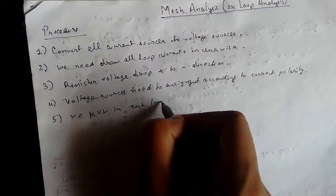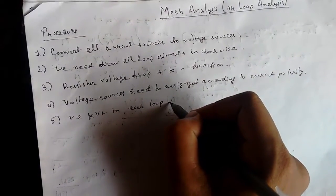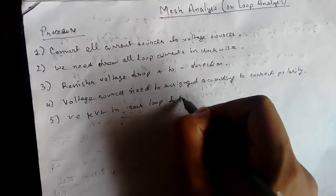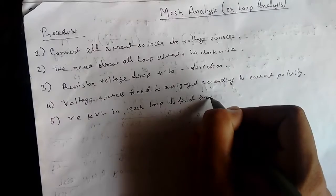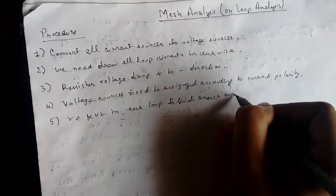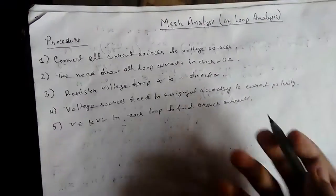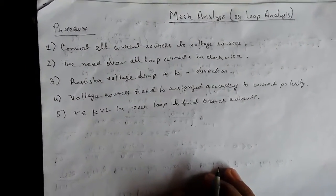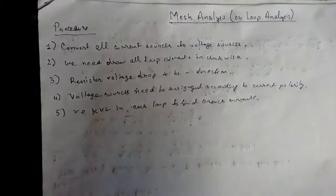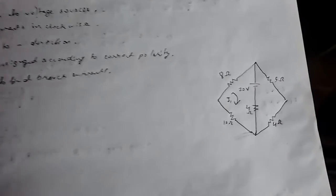We use KVL in each loop to find the currents, to find individual branch currents. And at last, we solve the equation and we get all the required answers.